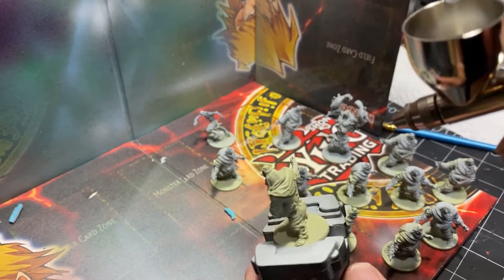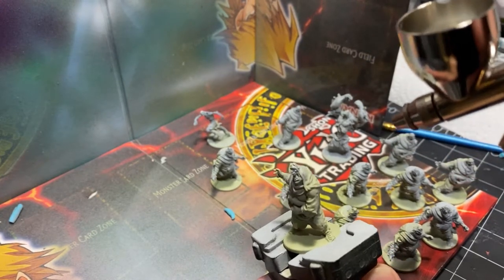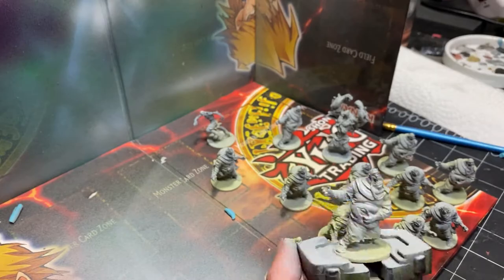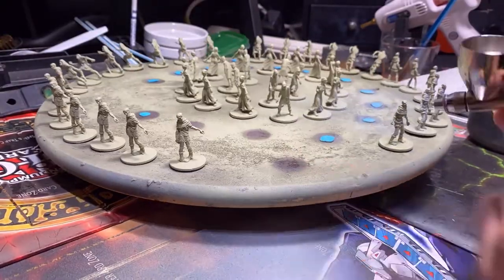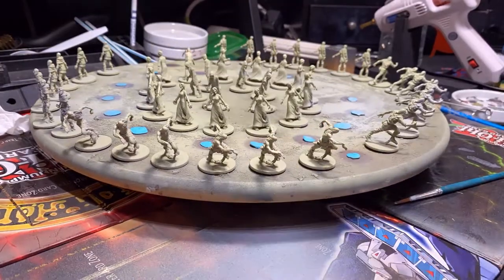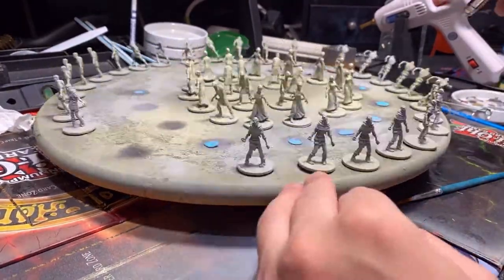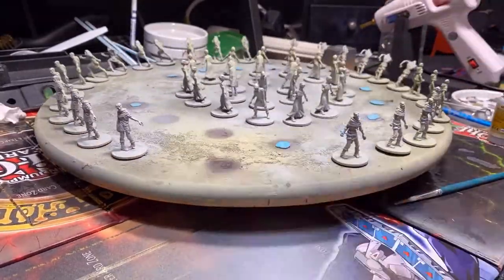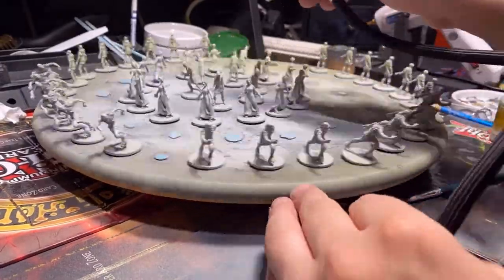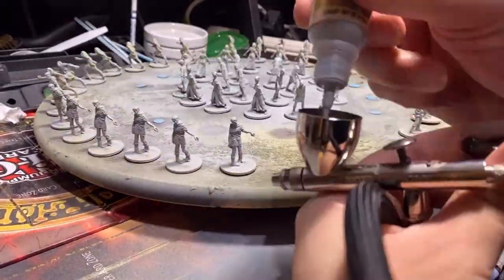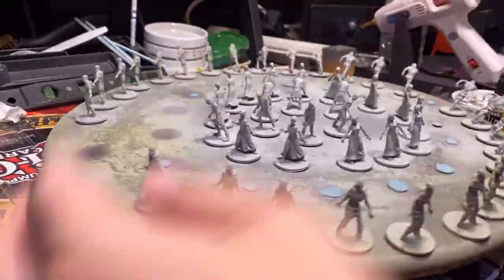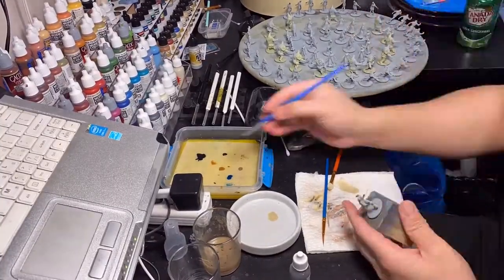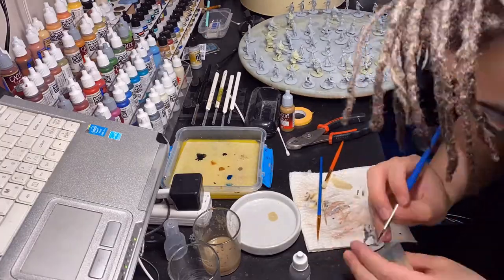I primed these in a skeleton bone primer, but then we later discussed and decided something more gray. So here I am hitting all the skin areas with this gray, this is a light blue gray from Vallejo model air or game air. For the bigger models I'm trying to save on paint, so I'm just hitting the specific skin areas. Everywhere else I'm hitting them all over because these are going to get a pretty good painting.